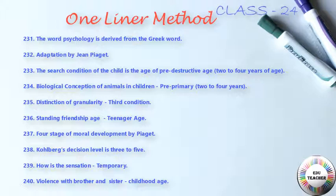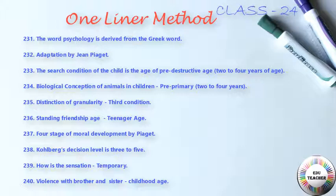Next: adaptation by John Piaget. Next: the search condition of the child is the pre-destructive age, two to four years of age. Next: biological conception of animals in children occurs in pre-primary stage, two to four years.